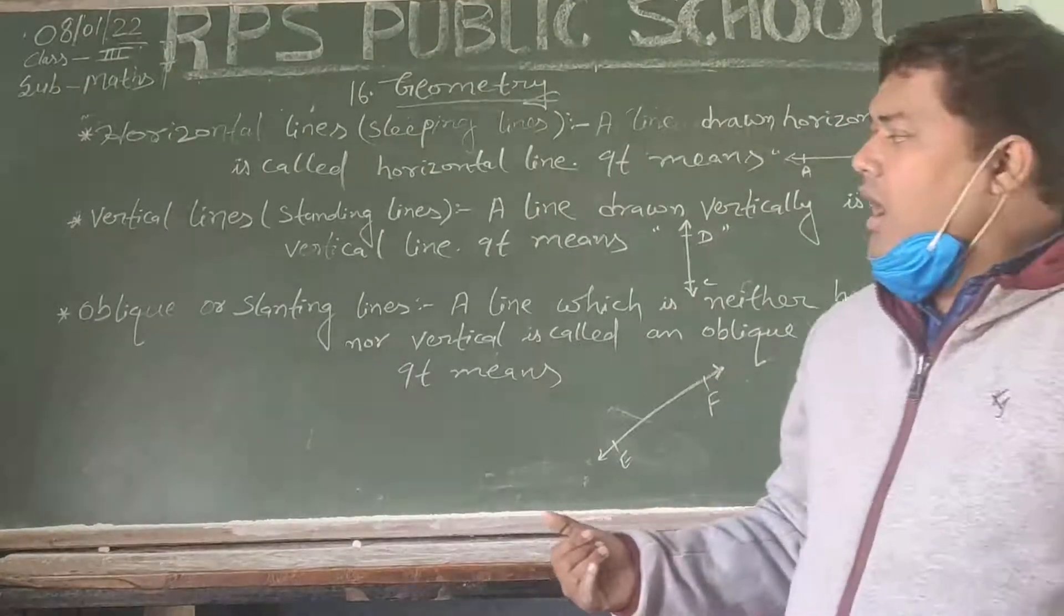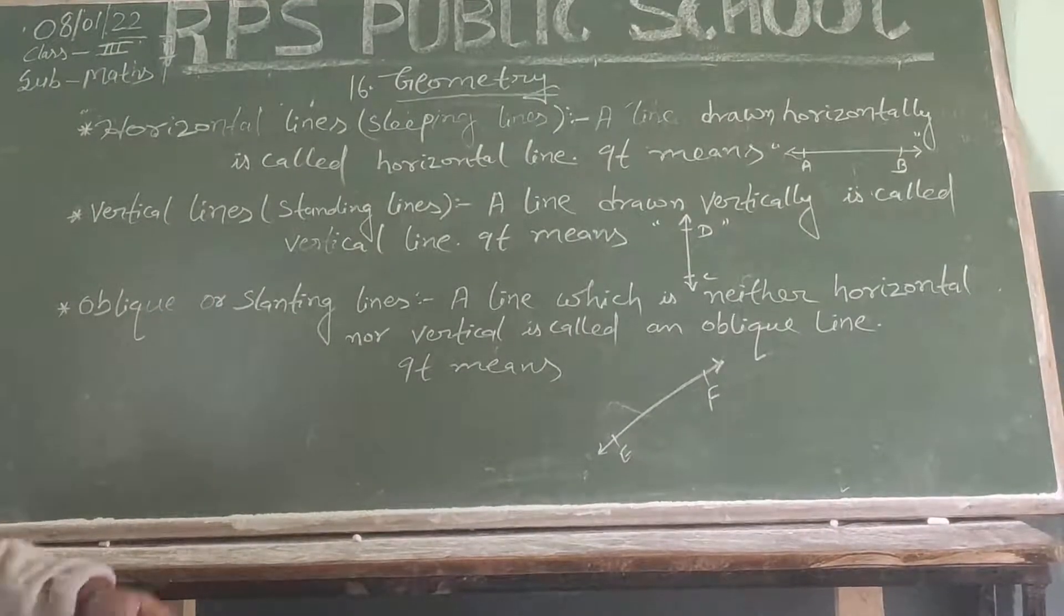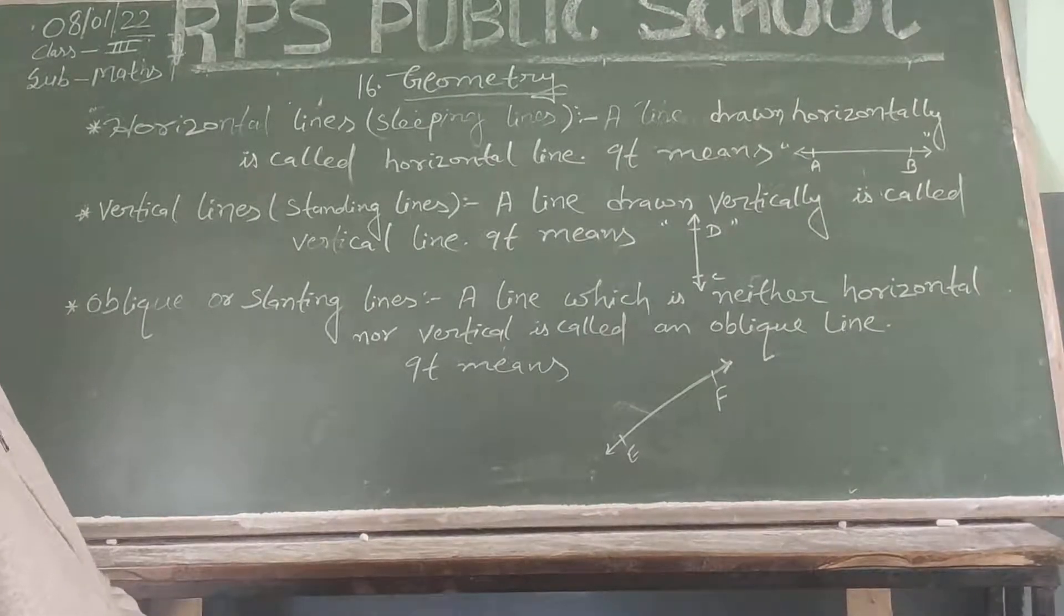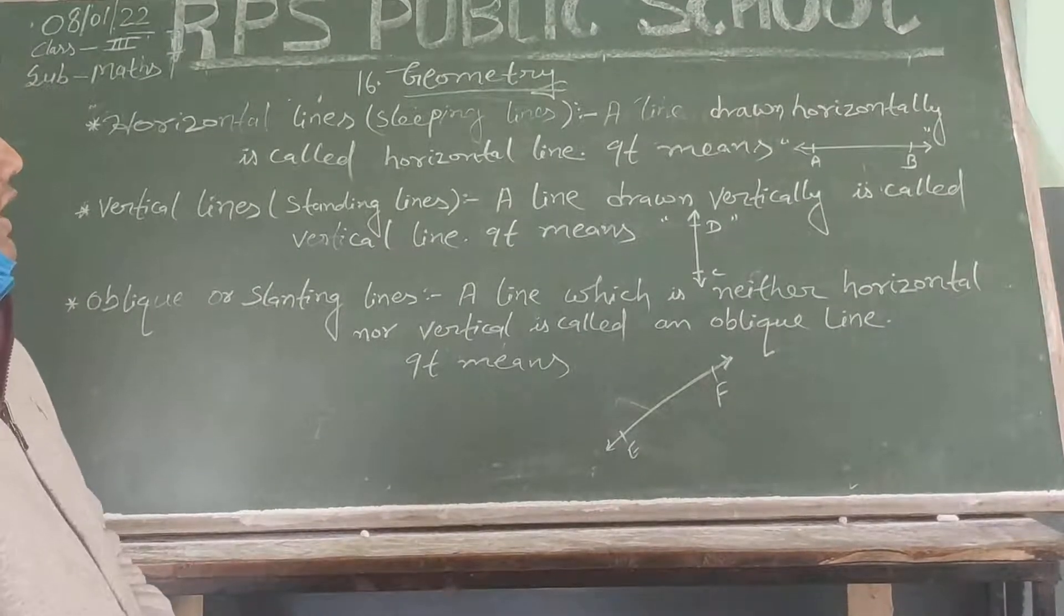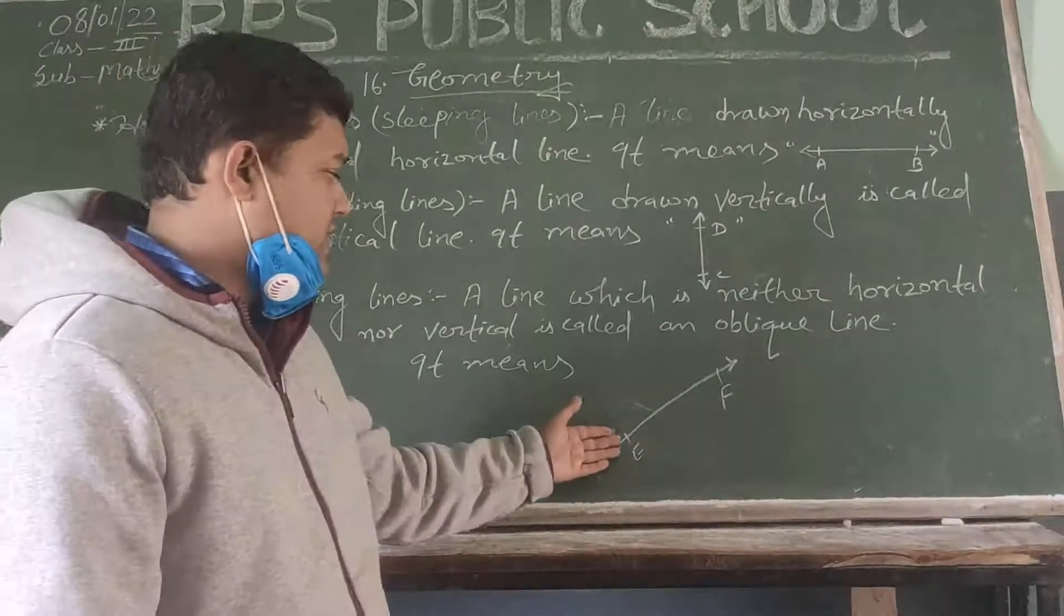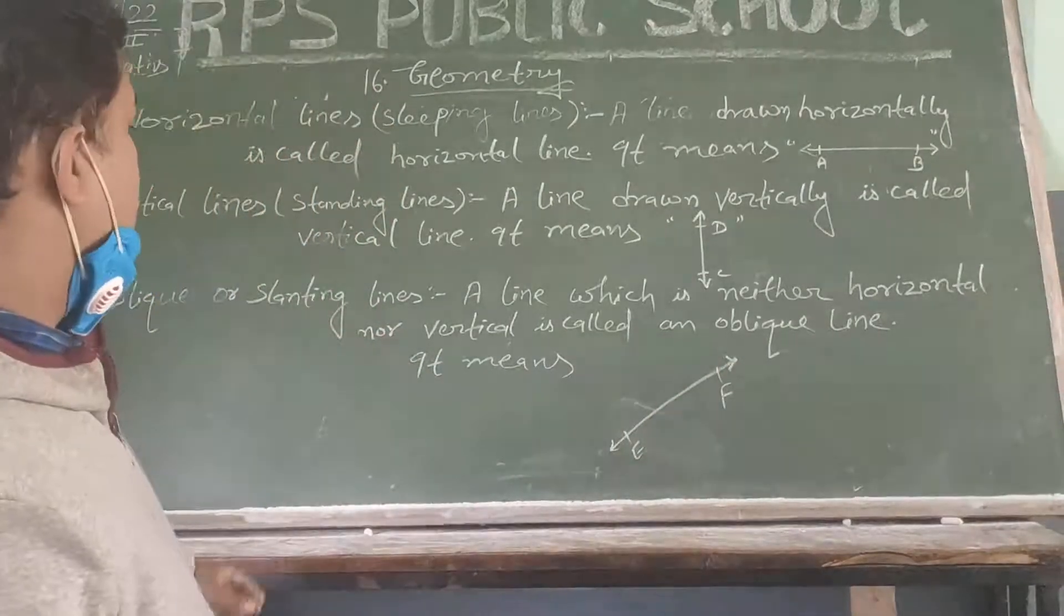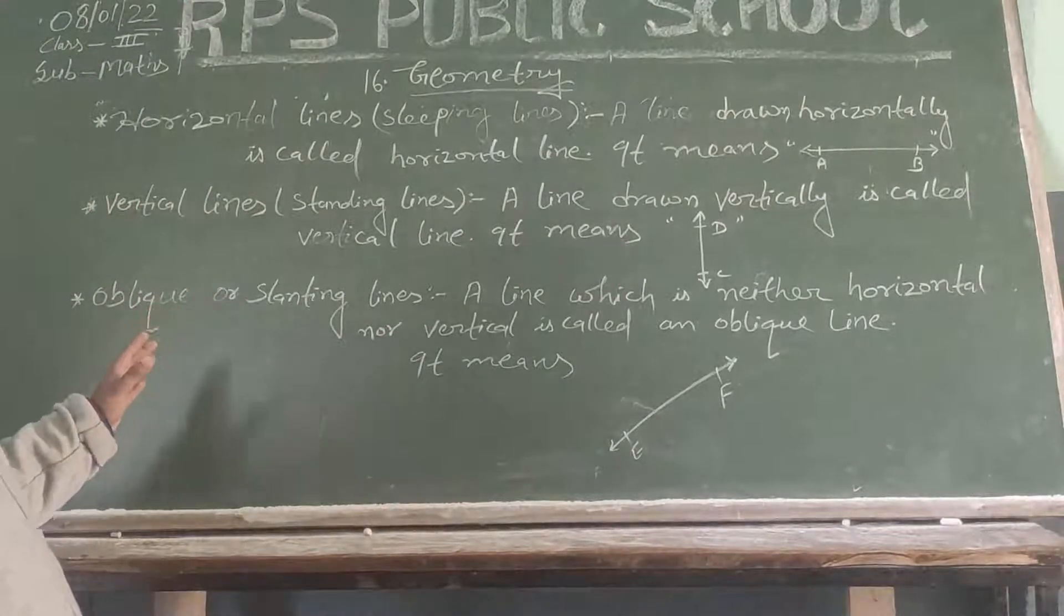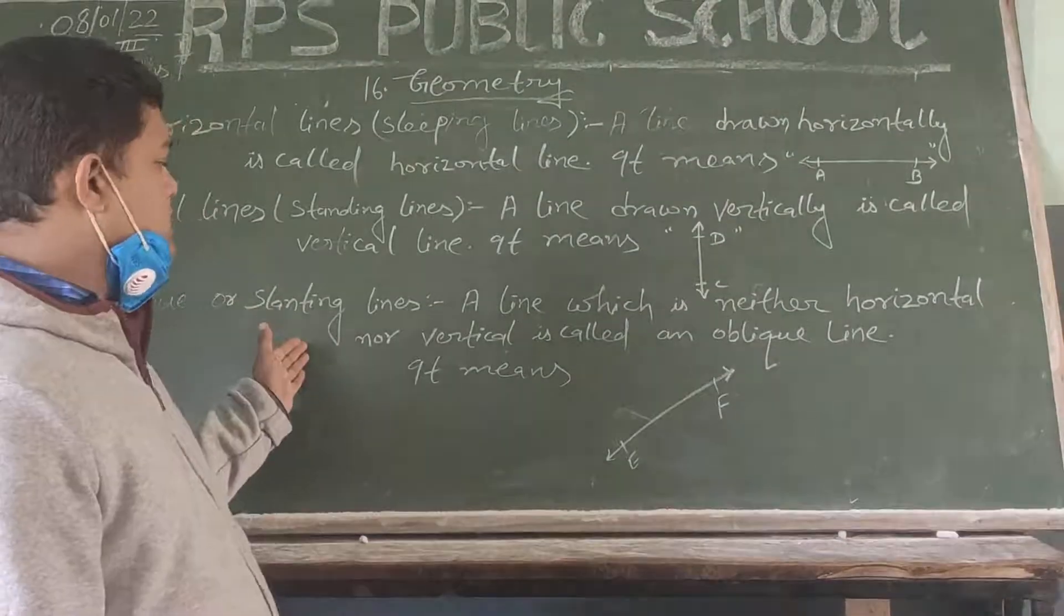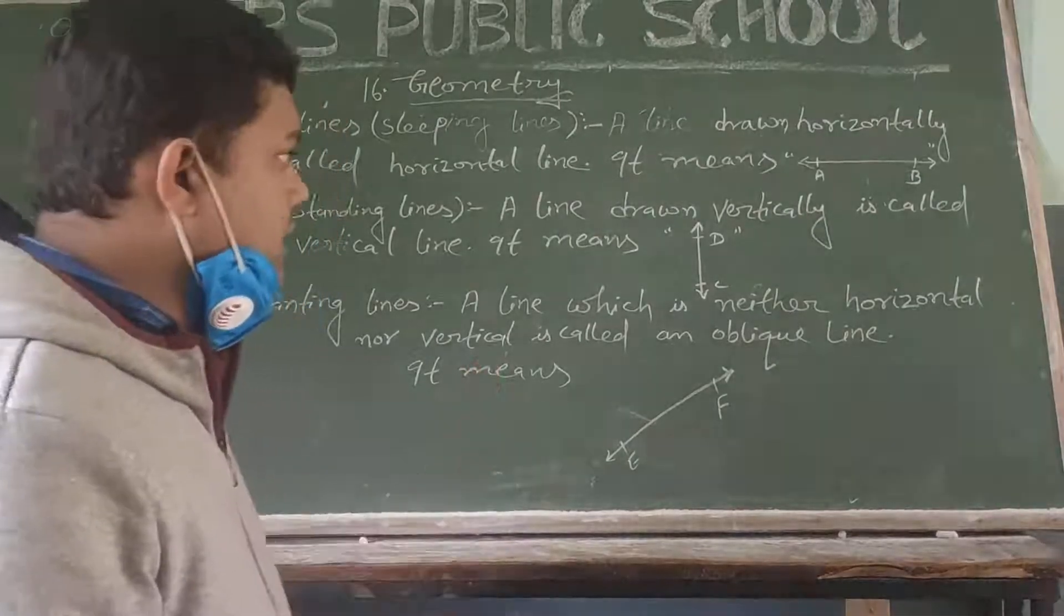Now, oblique or slanting lines. When you are in the left hand, lines to the right hand side, this line will be oblique or slanting.